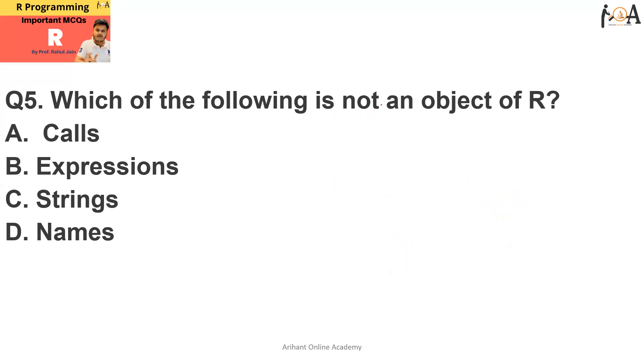Next question is which of the following is not an object of R? Calls, expressions, strings, and names. Calls are objects of R, expressions are objects of R, and names are also objects of R. But strings are not an object of R, so option C is the correct answer here.